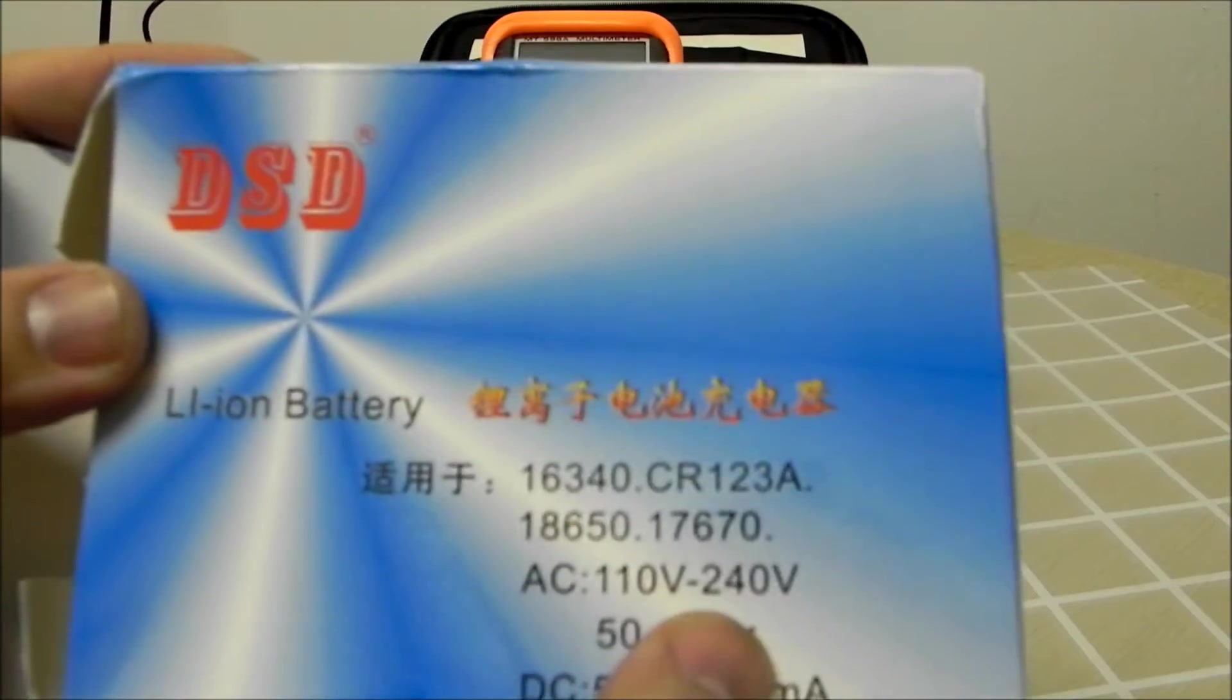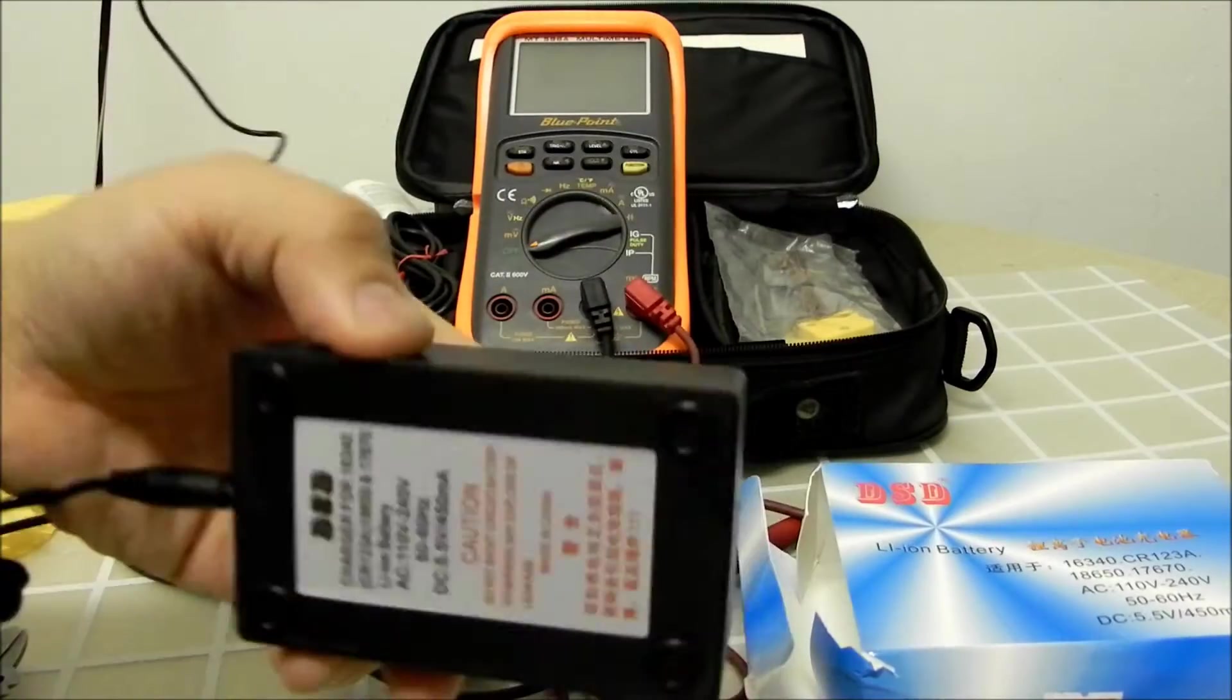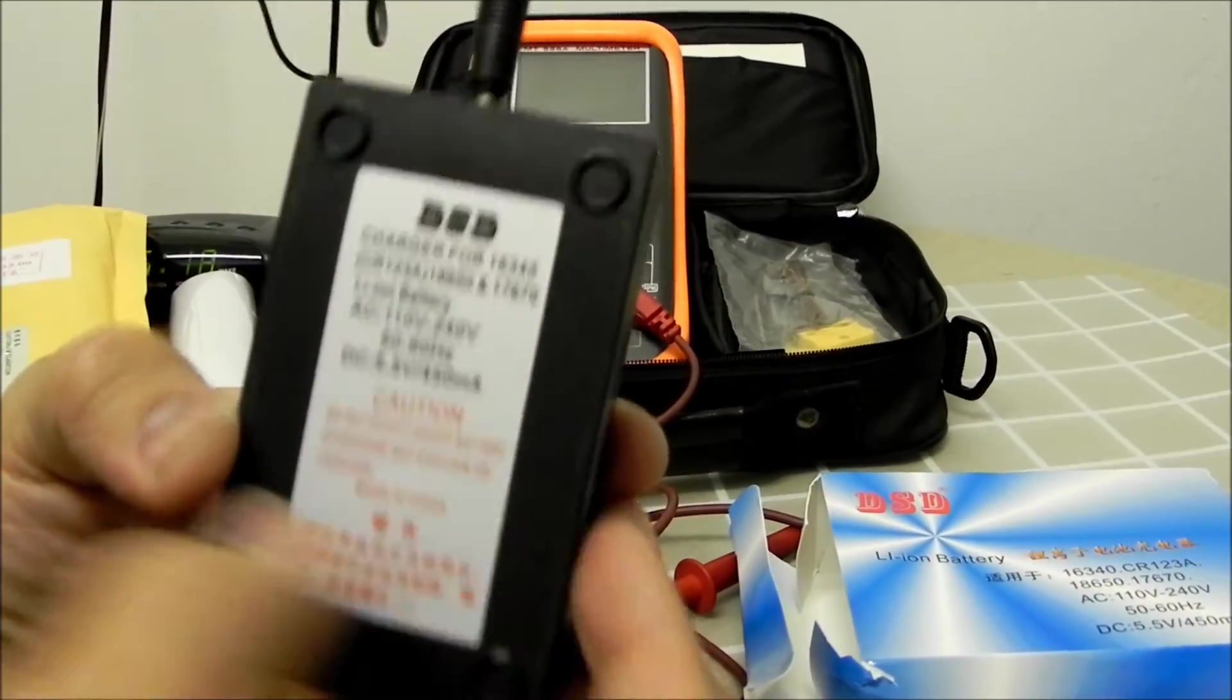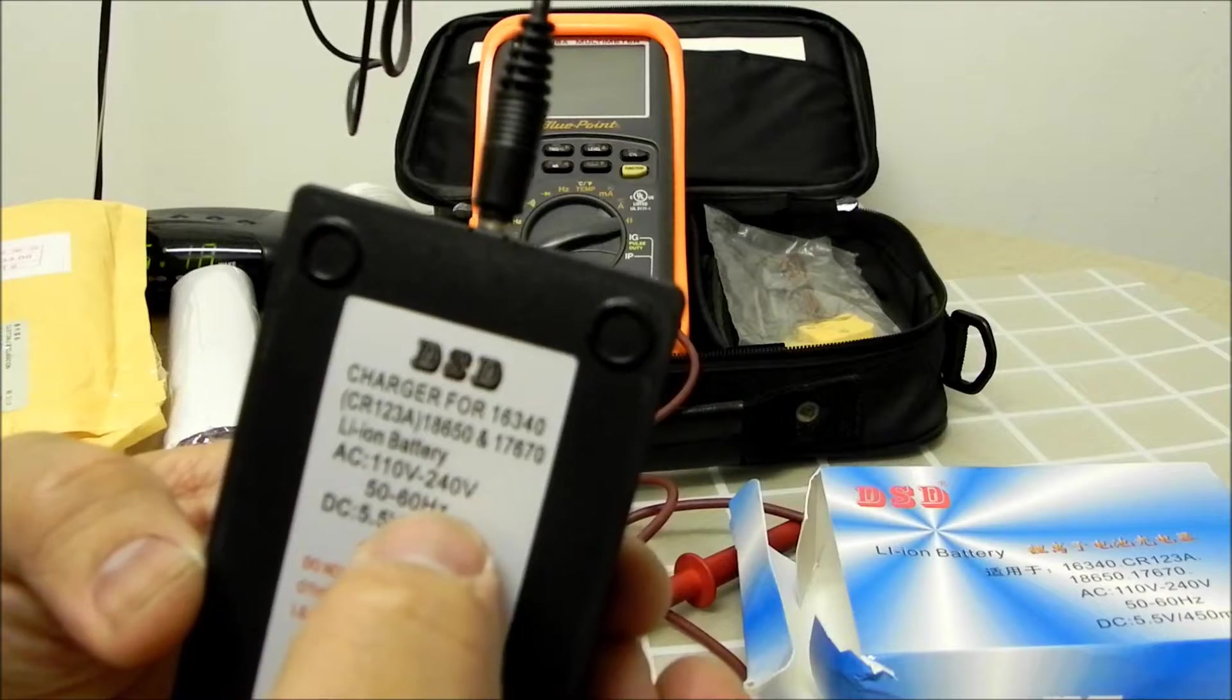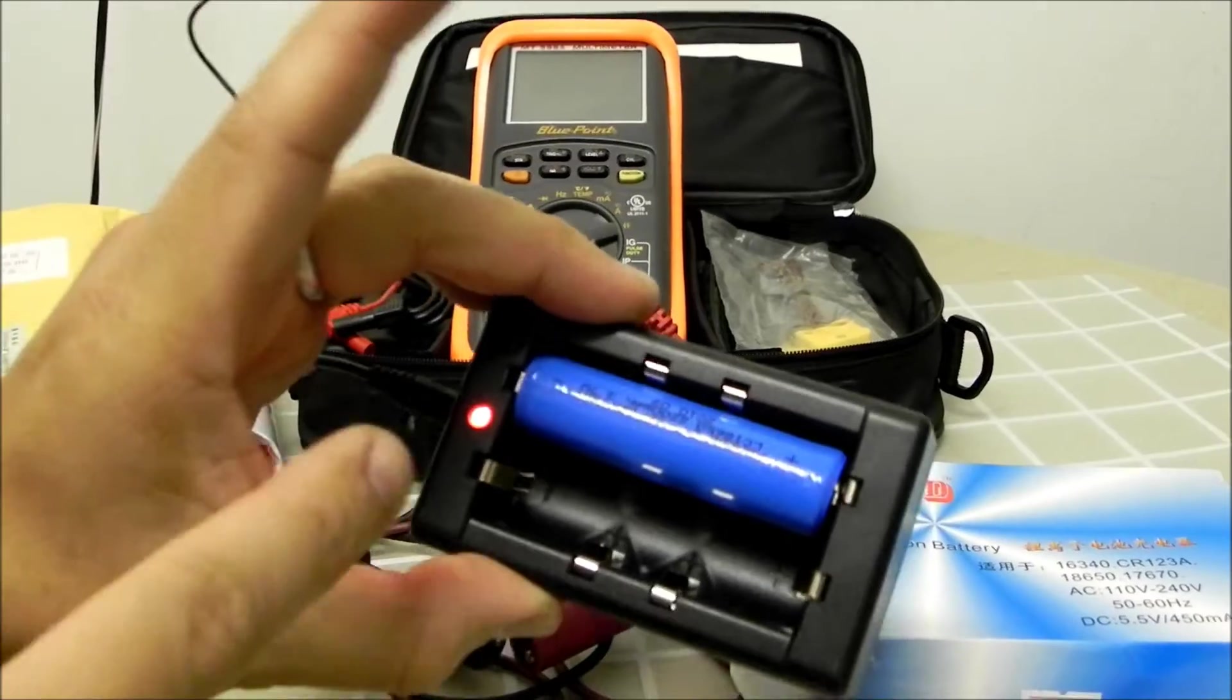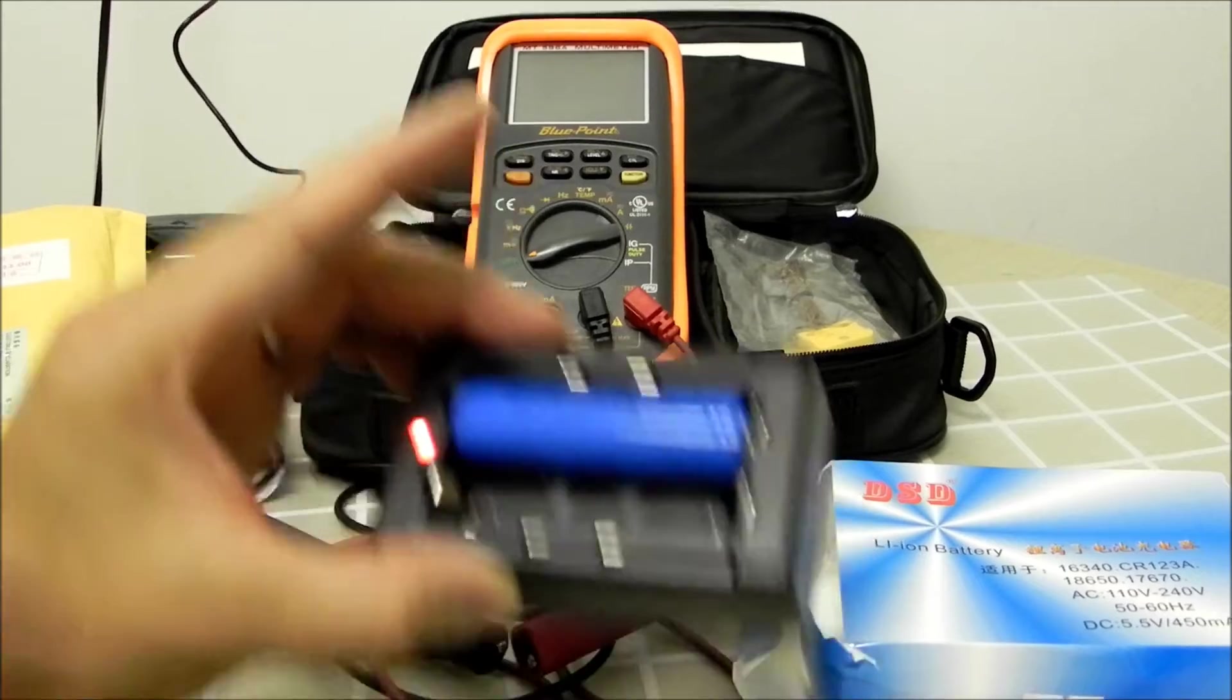110 to 240 volts. Made in China, I guess. I don't know. It doesn't say which country it's made in. Oh, here we go. Made in China. 50 to 60 hertz, 110 to 240 volts. So, there's my review. Red light on to indicate charging, I suppose. I'm assuming it'll turn green when it's done charging.